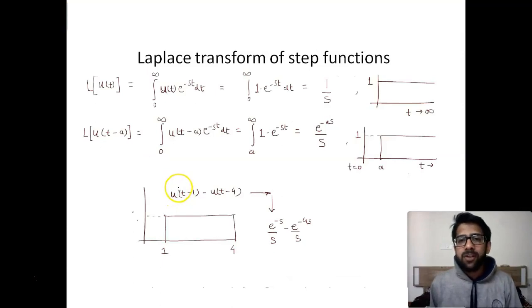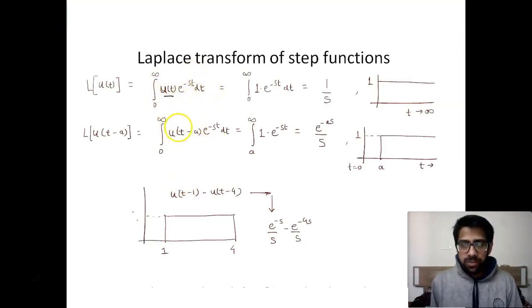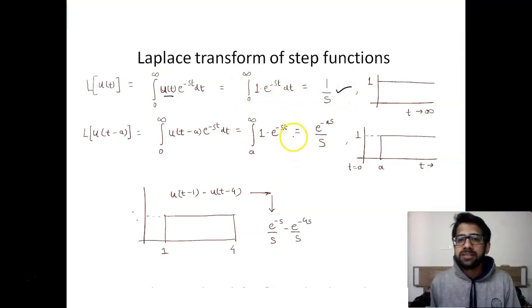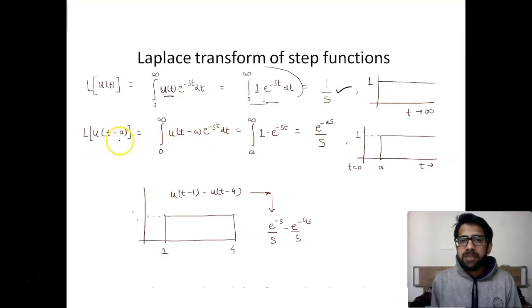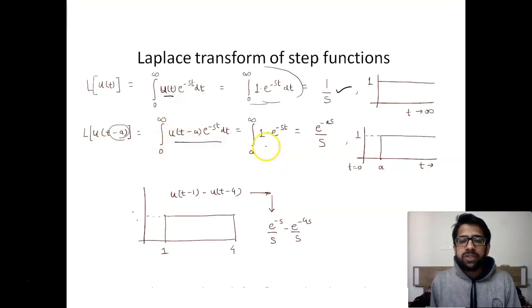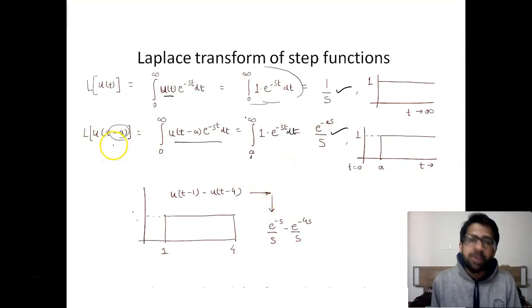The Laplace transform of the step function u(t) is found by integrating u(t) times e raised to minus st dt from 0 to infinity. Since u(t) equals 1 for 0 to infinity, we replace u(t) by 1 and get the Laplace transform as 1 upon s. For u(t minus a), its value is 1 for t greater than or equal to a, so the integration limits change from a to infinity, giving the Laplace transform as e raised to minus as upon s.